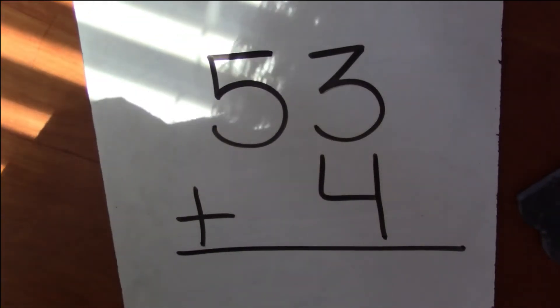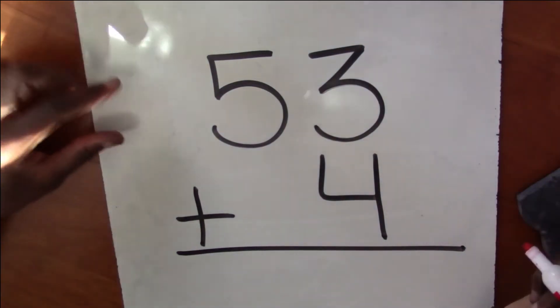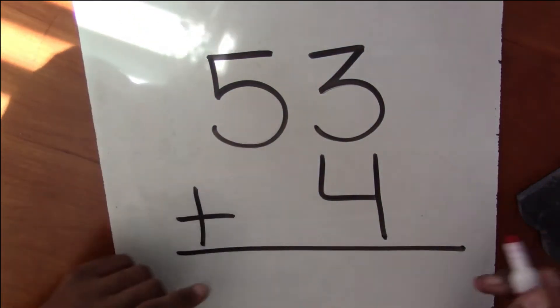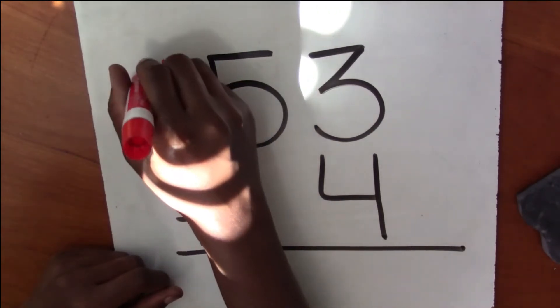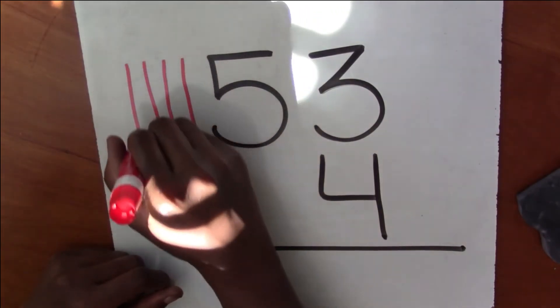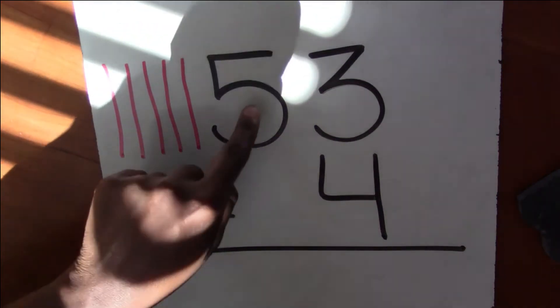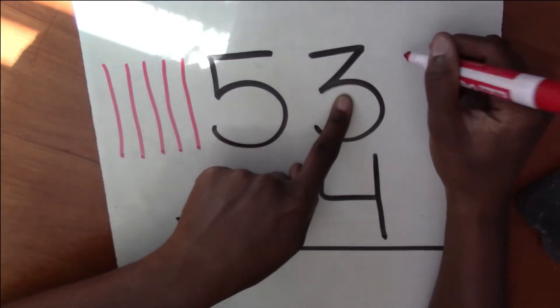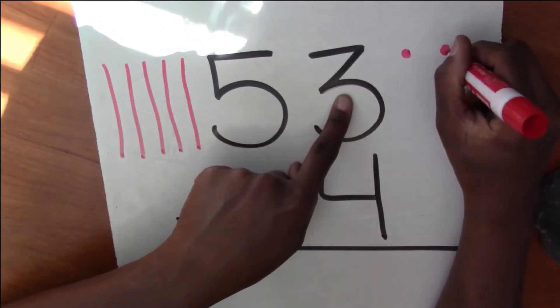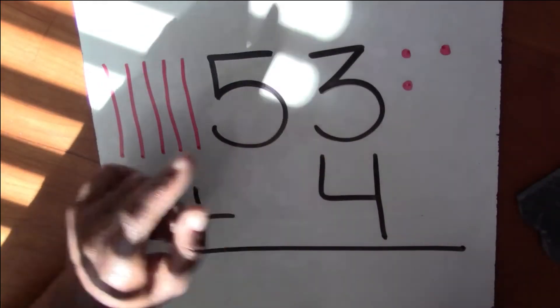Are you ready to check your answer? Okay, let's draw our 10 sticks first. So I need five groups of 10. 10, 20, 30, 40, 50. Five groups of 10. Now I need three ones. One, two, three.